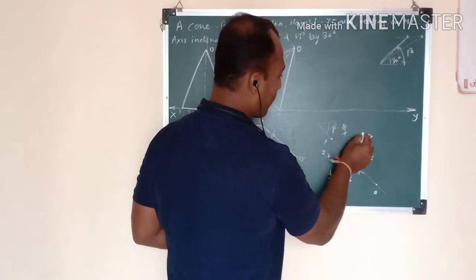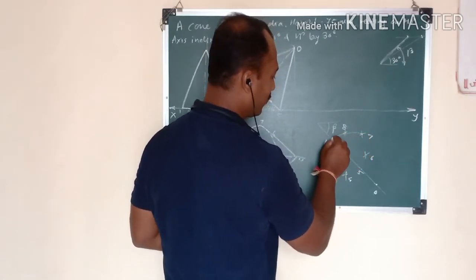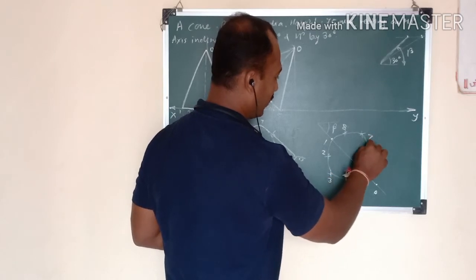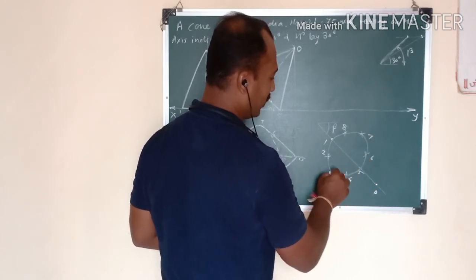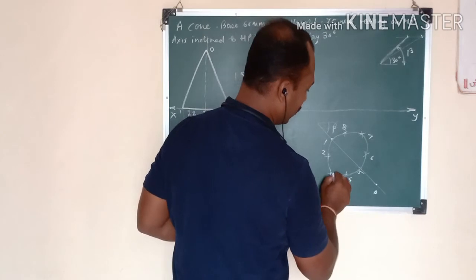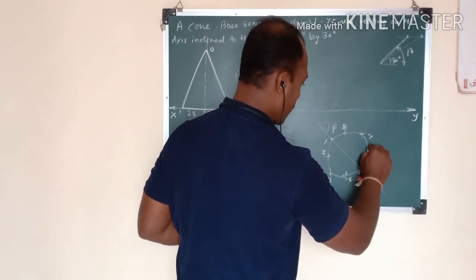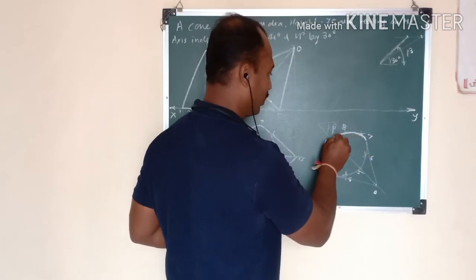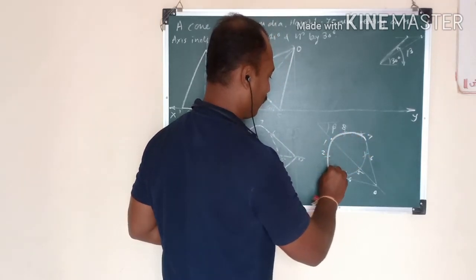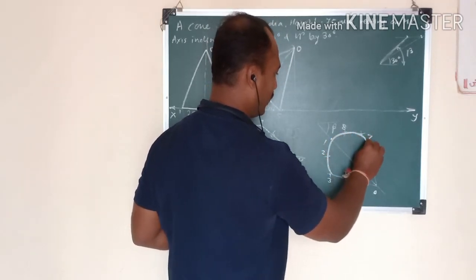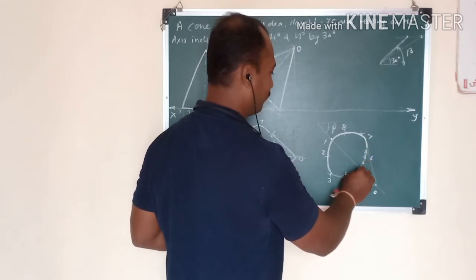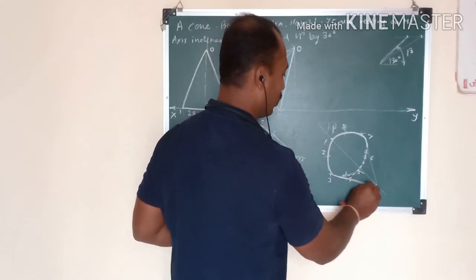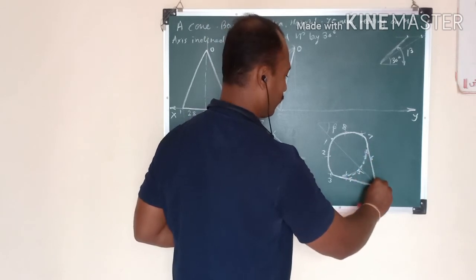Follow the same process as before: first join the ellipse with smooth curve using thin line. Then draw the tangent lines. Make the visible portion thick as a continuous line, and the hidden side portion as a dashed line — only a portion continuous.